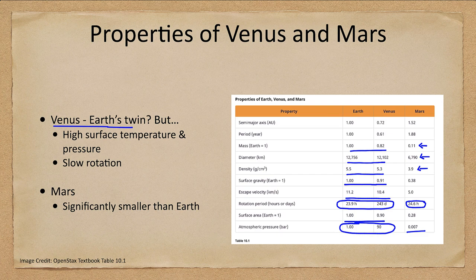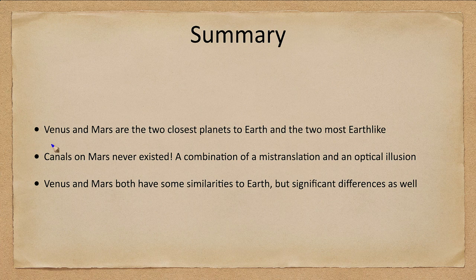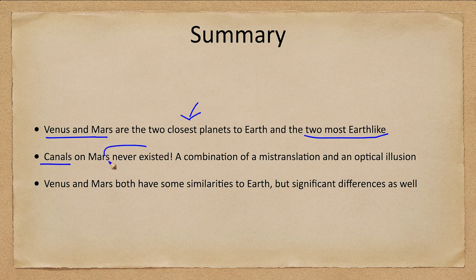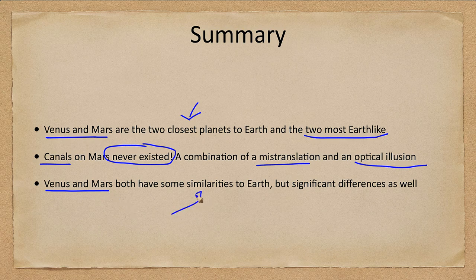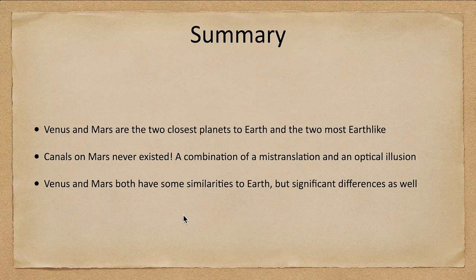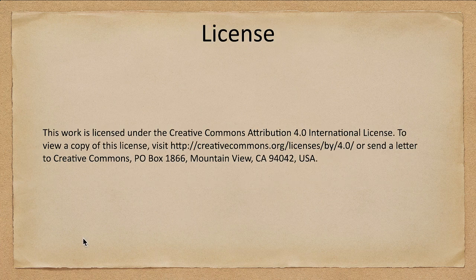We'll look at both of these in more detail in the coming lectures — this is just an overview to start out this lesson. Mars and Venus are the two closest planets to Earth and the two that are probably most Earth-like in many ways. We talked about the canals on Mars, which never existed — really a combination of a mistranslation and an optical illusion — and then looked at the different properties and how each planet has similarities to, but also significant differences from, Earth. That concludes this lecture on Earth-like planets. We'll be back again next time for another topic in astronomy.